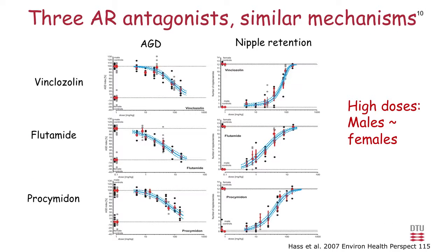As an example of the single-substance data, we used three AR antagonists — three substances with the same mechanism of action. For both anogenital distance and nipple retention, we obtained very nice dose-response curves. At the higher doses, males had similar AGD as females and also had 12 nipples, which was a problem for sexing — we had to open the animals to check what sex organs they actually had.